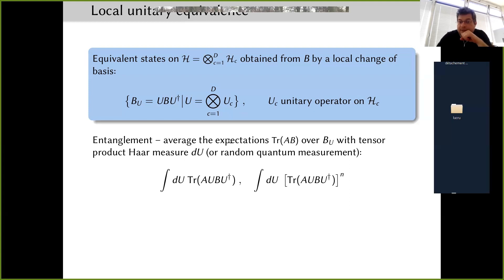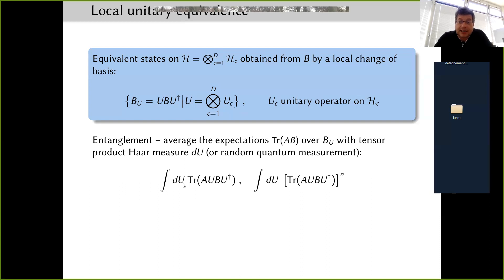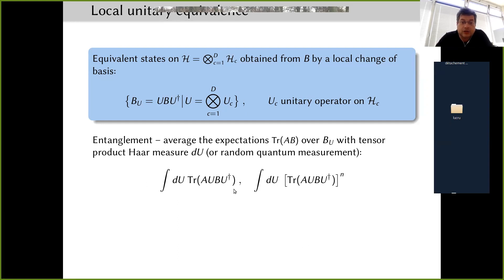Starting from a fixed state rho and observable A, the entanglement properties should survive averaging under U. Objects like the trace of A U rho U-dagger, averaged over the group, should capture information about the entanglement of the state. One could also look at higher moments: the trace to some power n averaged over the group U. These objects are expected to capture features like the entanglement of the system.